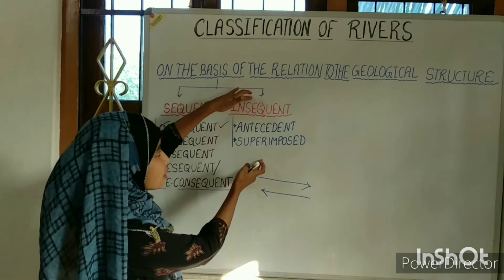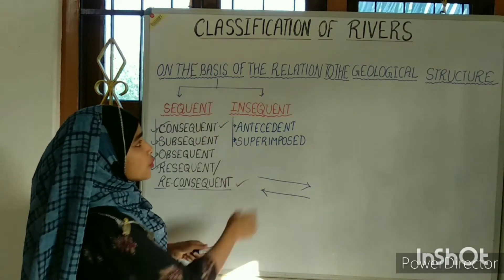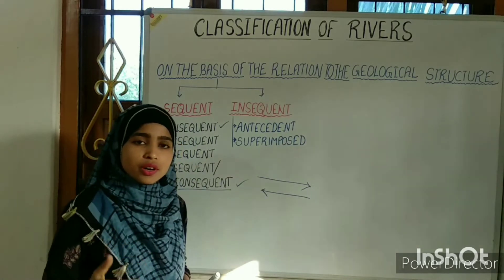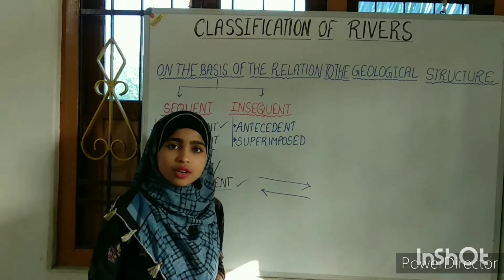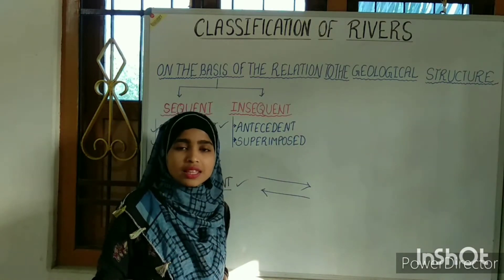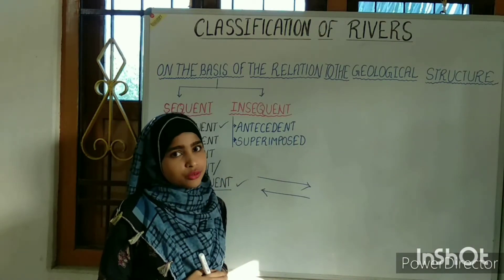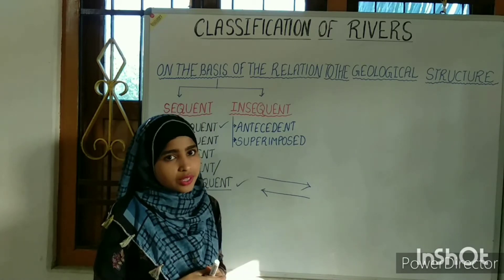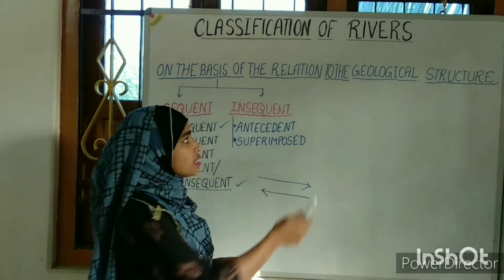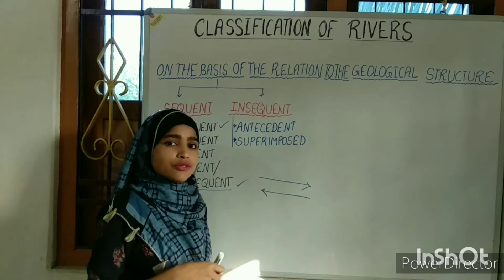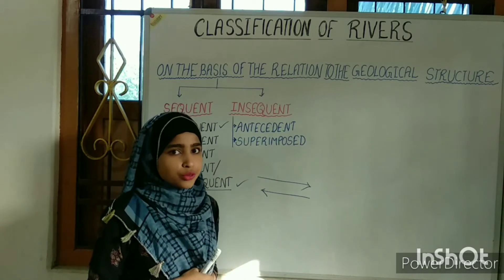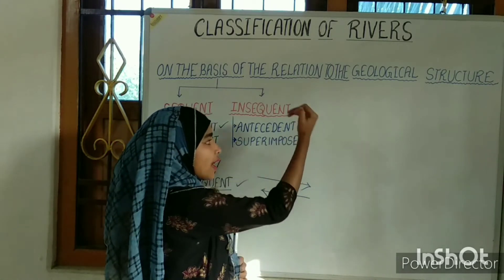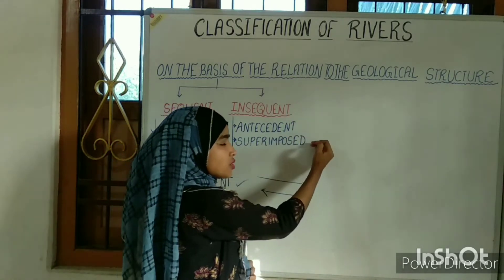Now let's move on to the insequent river. Insequent rivers are those rivers which do not follow the regional flow — they do not follow the geological structure. This insequent river is also classified into two groups: the antecedent stream and the superimposed stream.